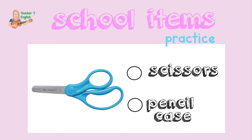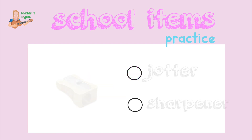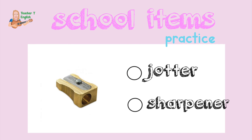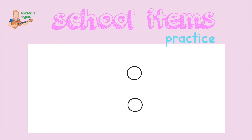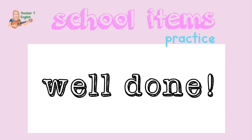Which object is it — scissors or a pencil case? It is a pair of scissors. Which object is it — a jotter or a sharpener? It is a sharpener. Wow, well done — you have answered all the school items!